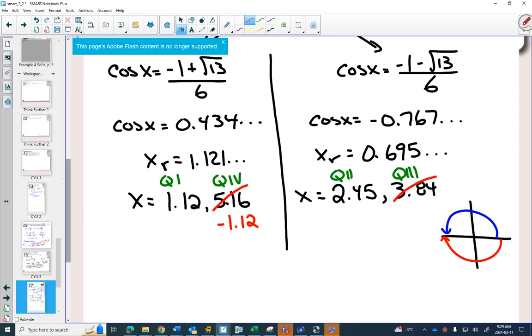And in quadrant 3, with a reference angle of 0.695, does quadrant 3 in the negative direction—do you realize that that's the same as quadrant 2, because you go two quadrants in the negative direction? So my answer here is going to be -2.45.